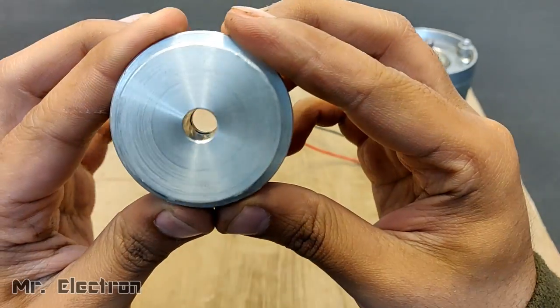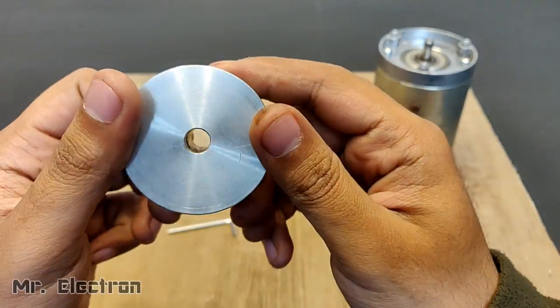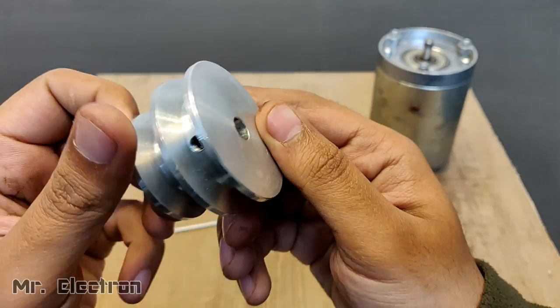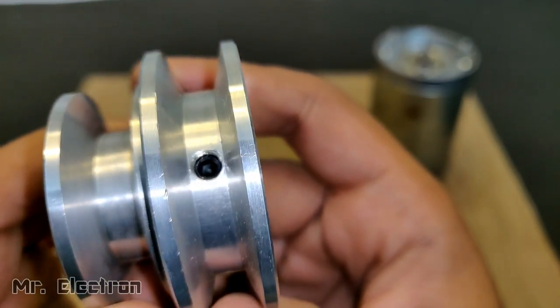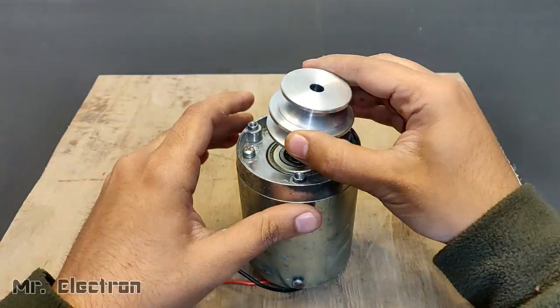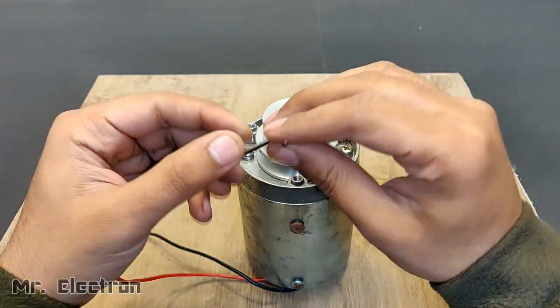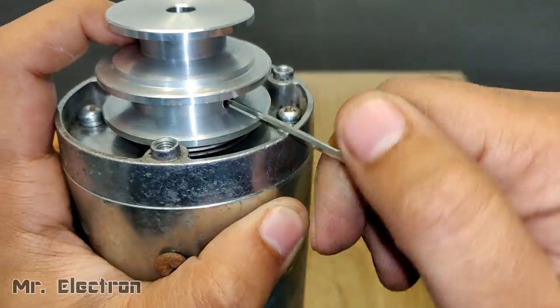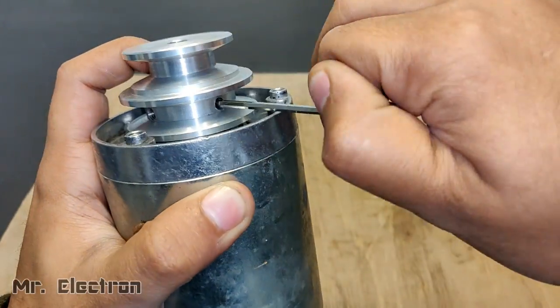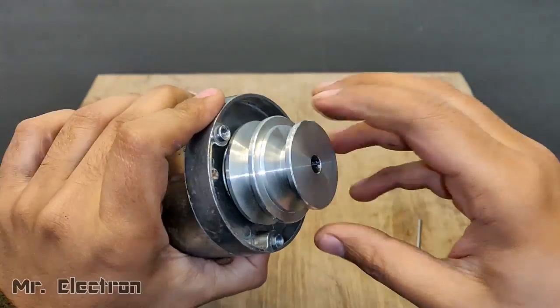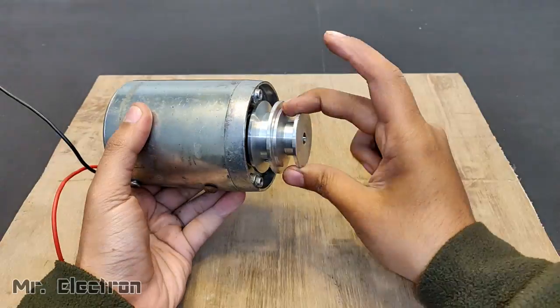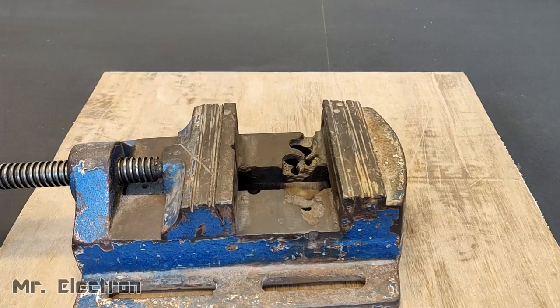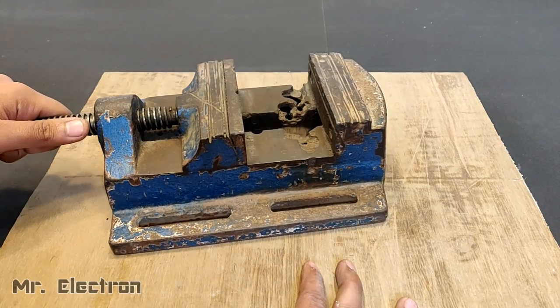You can see screws have been provided to tighten up the shaft, and it is an 8mm pulley. Link for this has been provided in the description. You can tighten it with the Allen keys that have already been provided to you with this pulley. You can see that this pulley fits perfectly to the RO motor shaft.